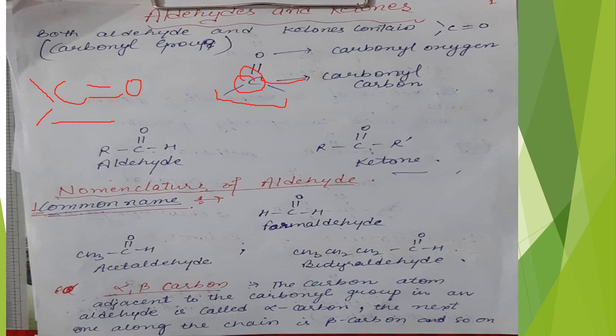That carbon is called carbonyl carbon and this oxygen is called carbonyl oxygen. Carbonyl compounds include aldehydes and ketones.